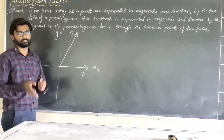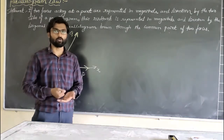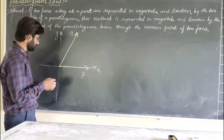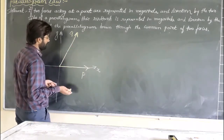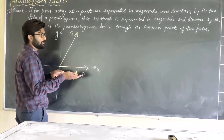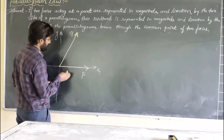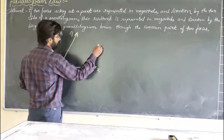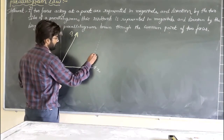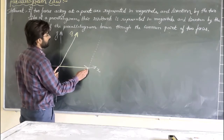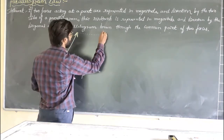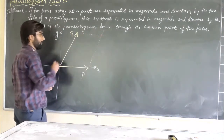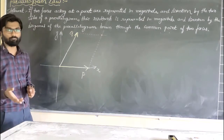To find the resultant using the parallelogram law, we need to convert this two-force system into a parallelogram. In a parallelogram, opposite sides are equal and parallel to each other. So for the side Q, we draw a parallel line to it. Similarly, for the side P, we draw a parallel line to it, and at the intersection we have formed a parallelogram.